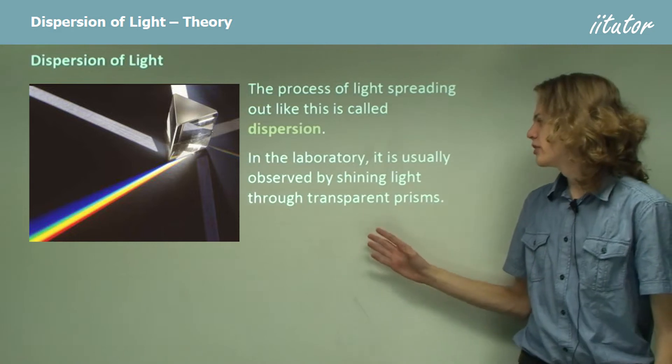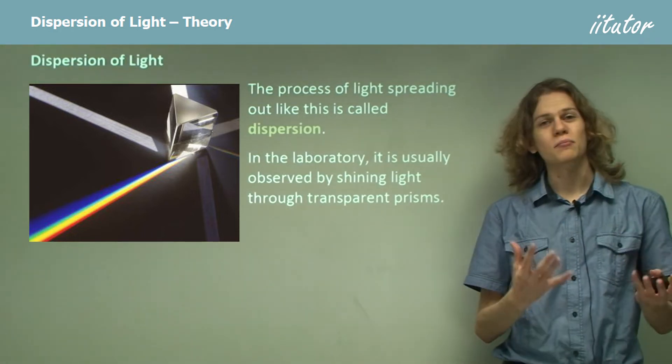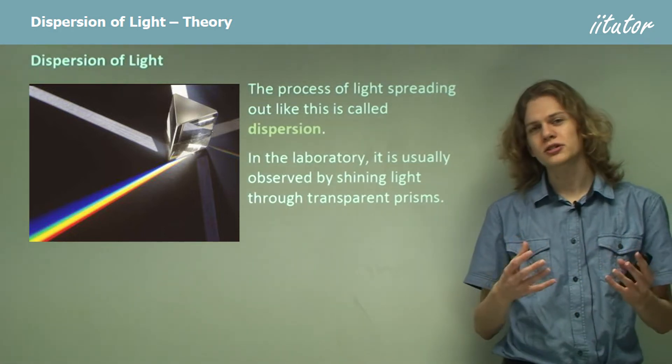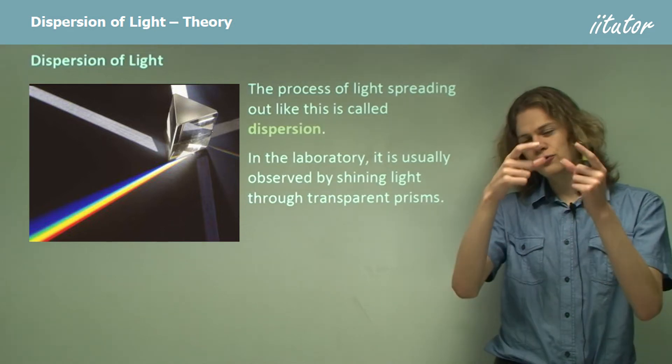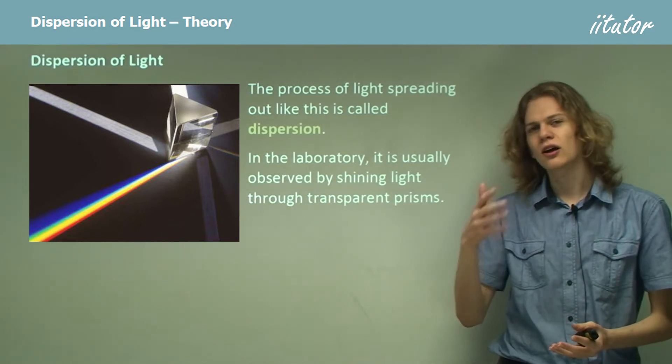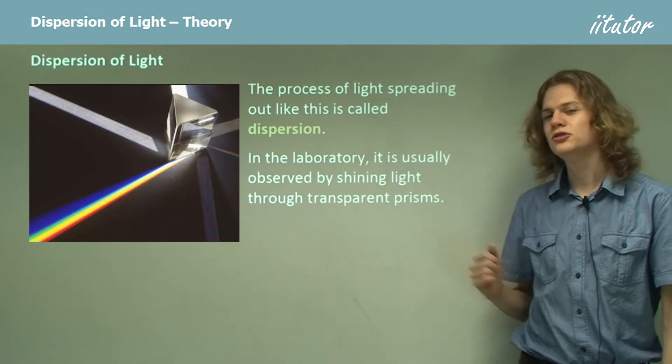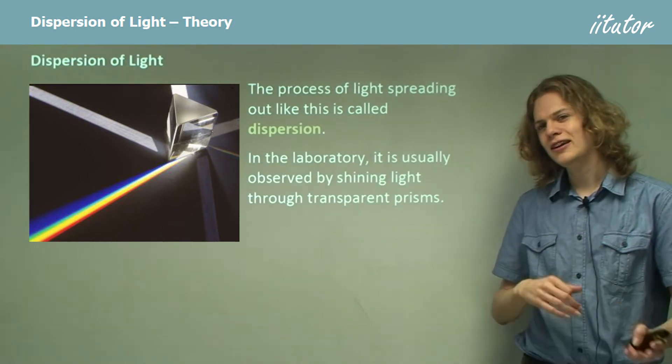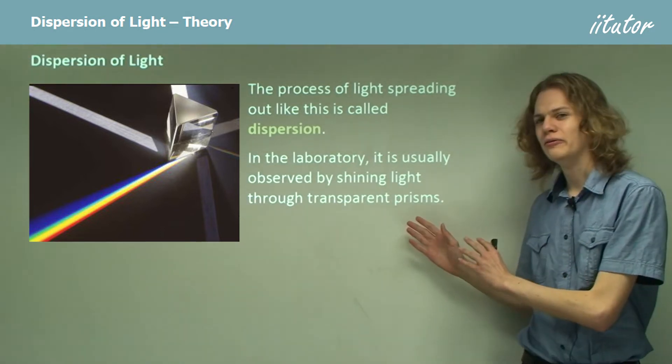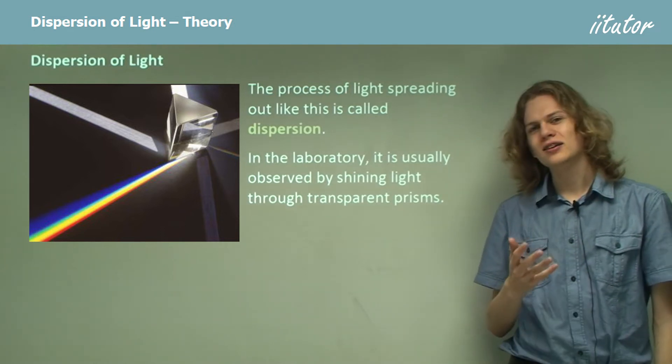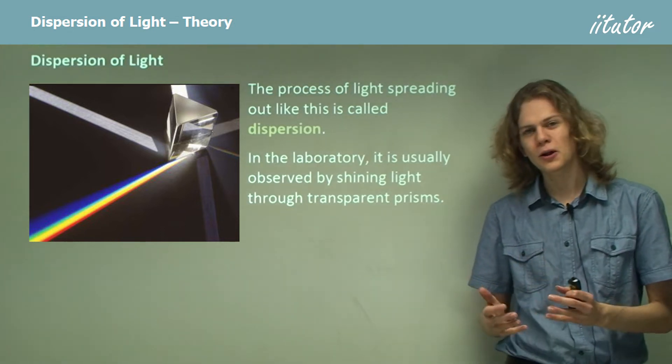In the lab we usually use prisms. We know from mathematics that prisms are simply three-dimensional shapes that have two faces identical, and then just straight lines joining them all up. In this case we have a triangular prism. However, in reality and out of the school laboratory, we can see refraction in many other objects as well.